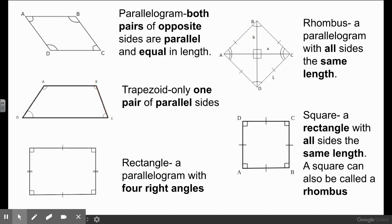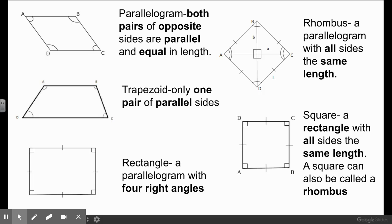A rectangle is a parallelogram because a parallelogram is any shape that has two pairs of parallel sides, and a rectangle definitely has two pairs. The rest of the definition for a rectangle is that it has four right angles. A rhombus is also a parallelogram because it has two pairs of parallel sides, and all its sides have to be the same length. Sometimes you will see it stretched out a little bit, but even then all the sides are still the same length, so it's still a rhombus.